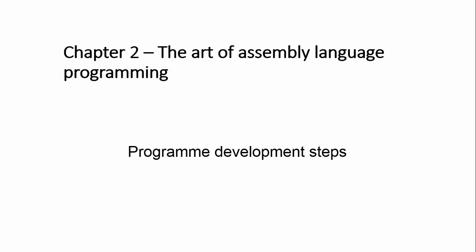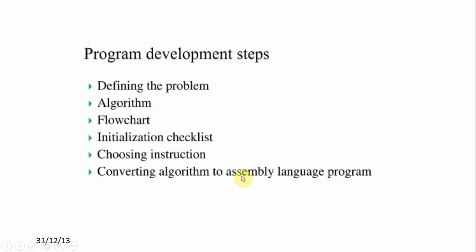What do you do in assembly language programming? You write the assembly language program. The program development steps of assembly language programming are: the first step is to define the problem, the second is to write the algorithm, the third is to write the flowchart, the fourth is the initialization checklist, the fifth is choosing instructions, and the sixth is converting the algorithm to assembly language programming.